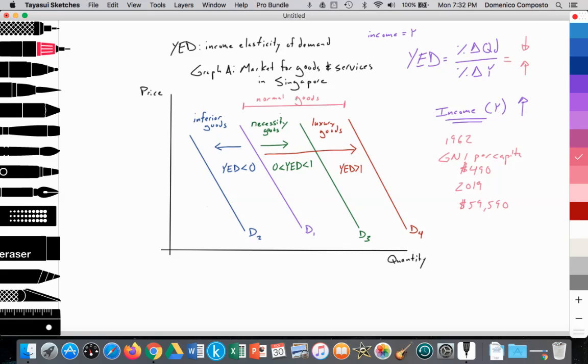As income continues to rise, demand for normal goods that are necessities increases from D1 to D3. This indicates that there's a positive relationship between income and the quantity of demand. They're moving in the same direction. Income rises, quantity of demand increases, demand shifts out from D1 to D3. And the YED value is between zero and one. So it's a normal good, it's a necessity, but the amount of consumption is limited. Because, for example, in the case of food, you can only consume so much food per day per person. It doesn't matter if you're a multi-billionaire or you're relatively poor, people consume about the same amount in a day. So their consumption is limited. It's between this range.